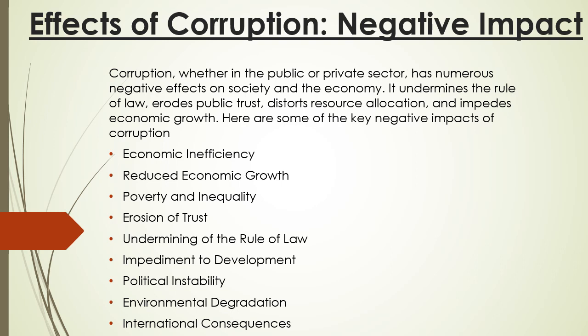Effects of Corruption — Negative Impact. Corruption, whether in the public or private sector, has numerous negative impacts on society and the economy. It undermines the rule of law, erodes public trust, distorts resource allocation, and impacts economic growth. Key negative impacts include: economic inefficiency, reduced economic growth, poverty and inequality, erosion of trust, undermining of the rule of law, impediment to development, political instability, environmental degradation, and international consequences. These are discussed in the next few slides with examples.